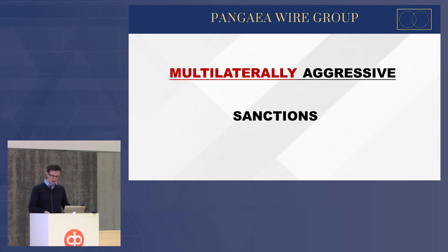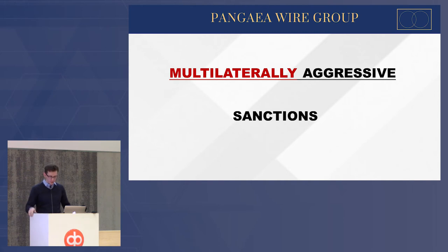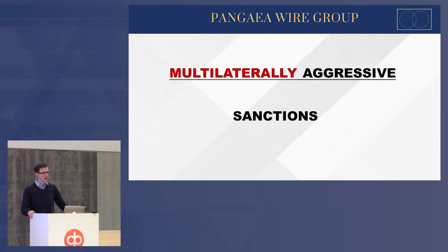International companies now need to really pick which sanctions body they're going to comply with — the EU's or the US's. It becomes really problematic when in some cases EU rules make it illegal to follow US sanctions. There are laws in the EU known as blocking regulations which prohibit EU companies from following US secondary sanctions. The regulation was updated in response to the US withdrawal from the Iran deal, which really puts companies between a rock and a hard place.